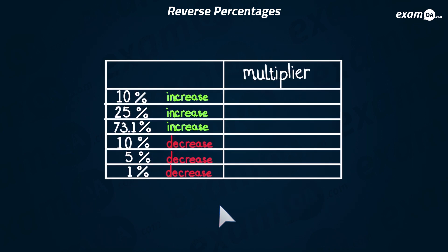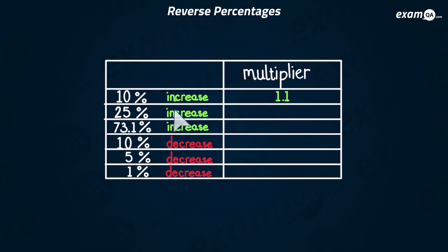In each of these cases I want you to guess what the multiplier would be. The first one is a 10% increase — to do a 10% increase on a value, what's the multiplier? Hopefully you said 1.1, and whenever we're increasing it's going to be one point something. The next one is a 25% increase and the multiplier in that case would be 1.25. The next one's a little bit more tricky — a 73.1% increase — hopefully you said 1.731.